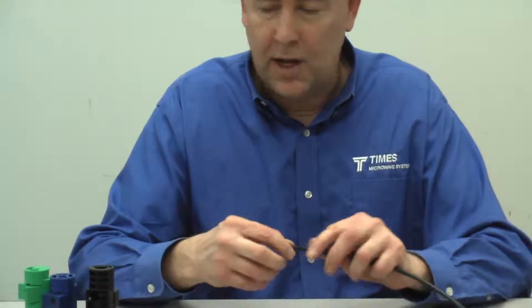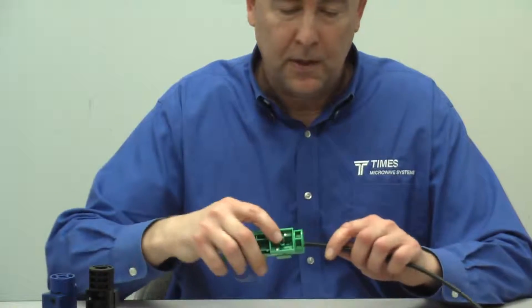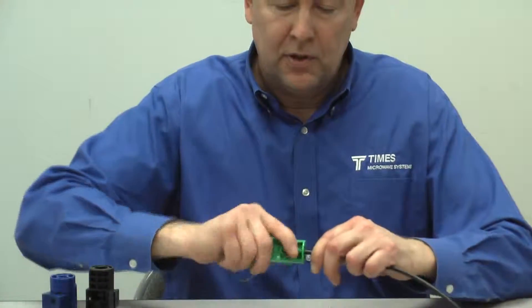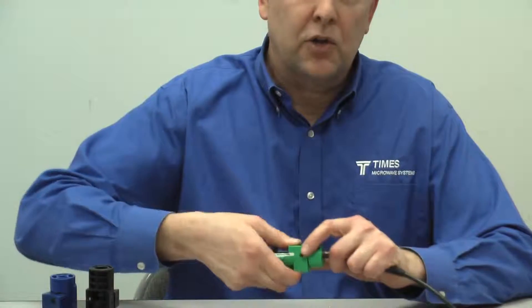At that point, we'll take the ferrule and place it over the cable. Take our CST-248 tool, make sure it's clean, place it over the cable, push down on the thumb switch, and once it's depressed all the way, make an extra couple of revolutions.